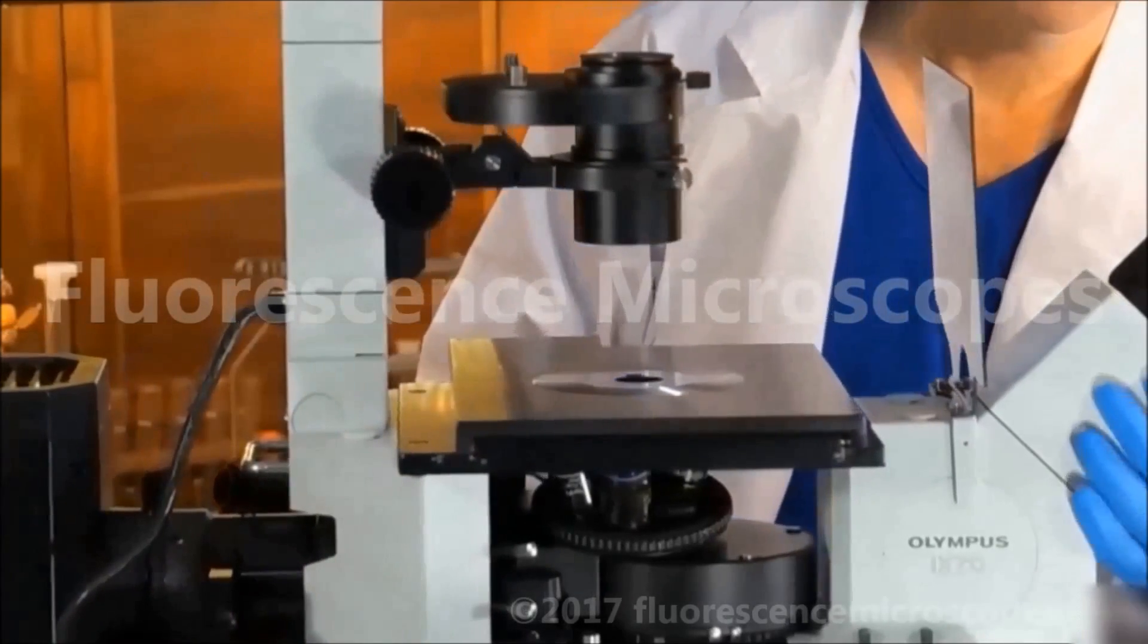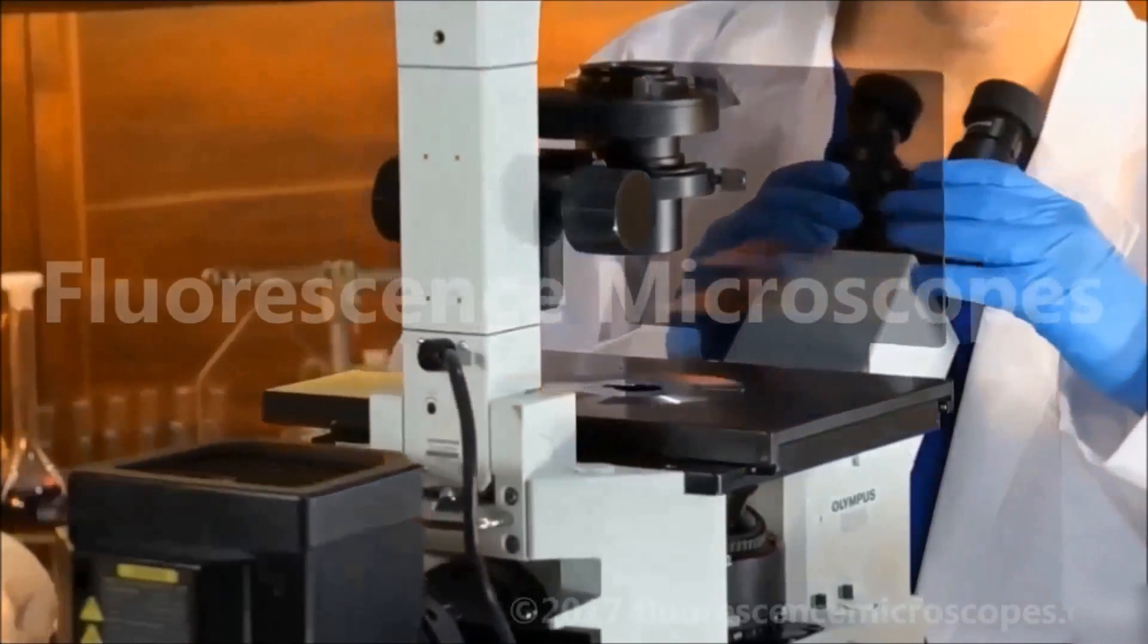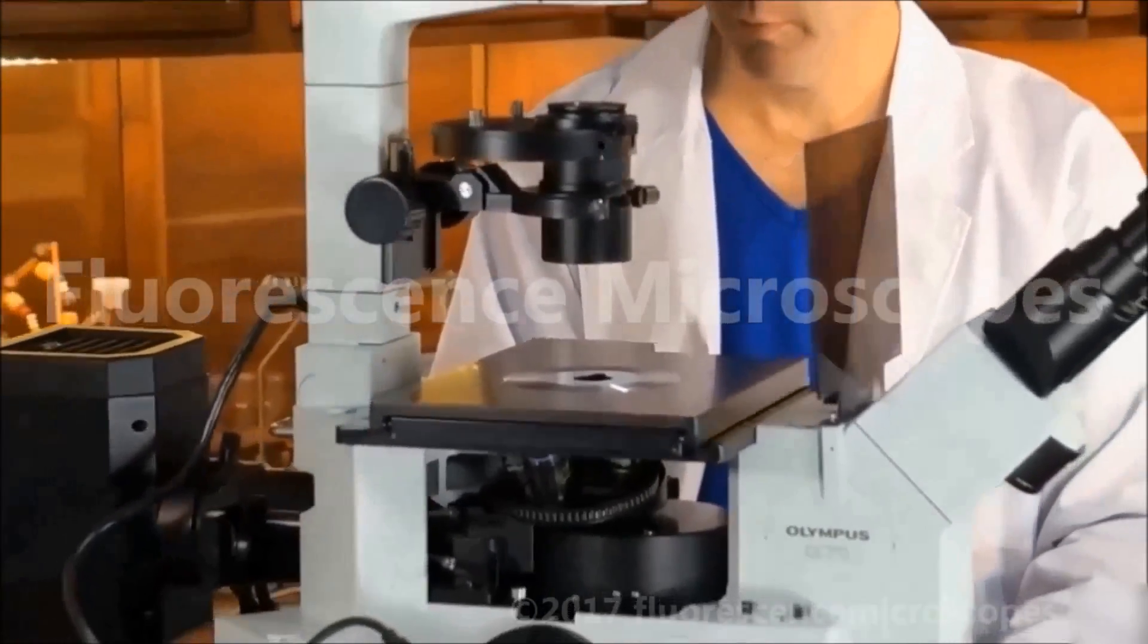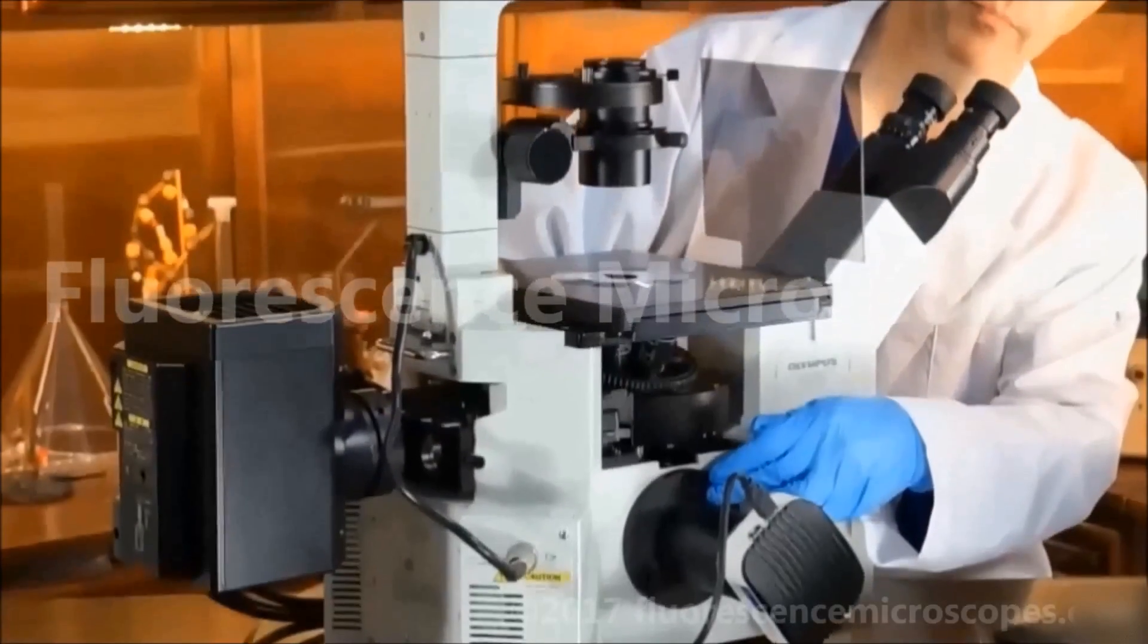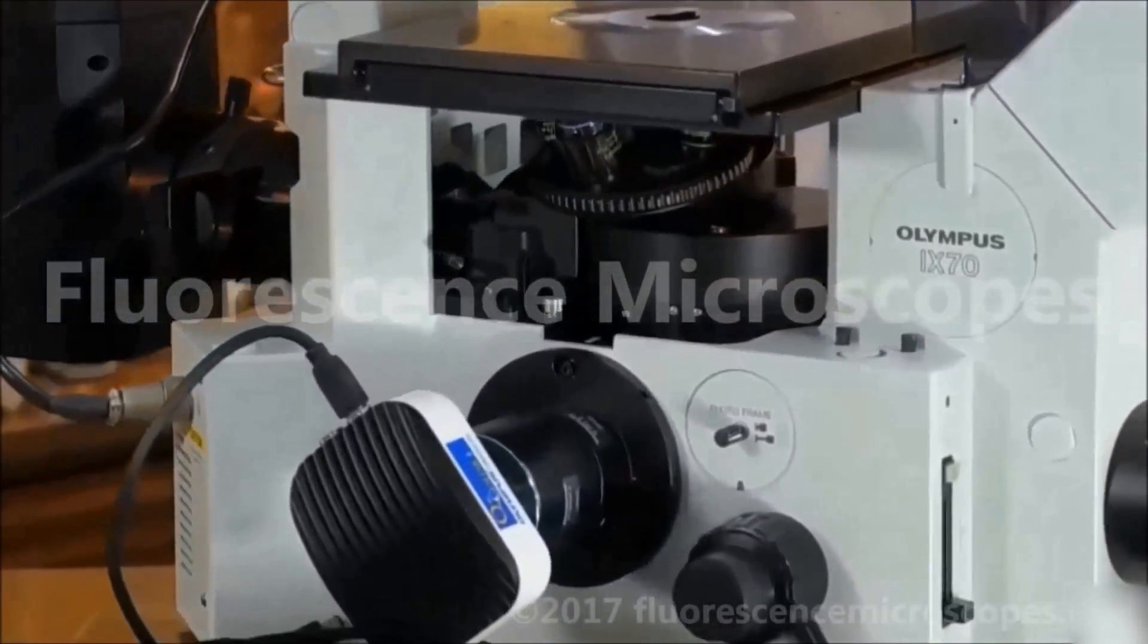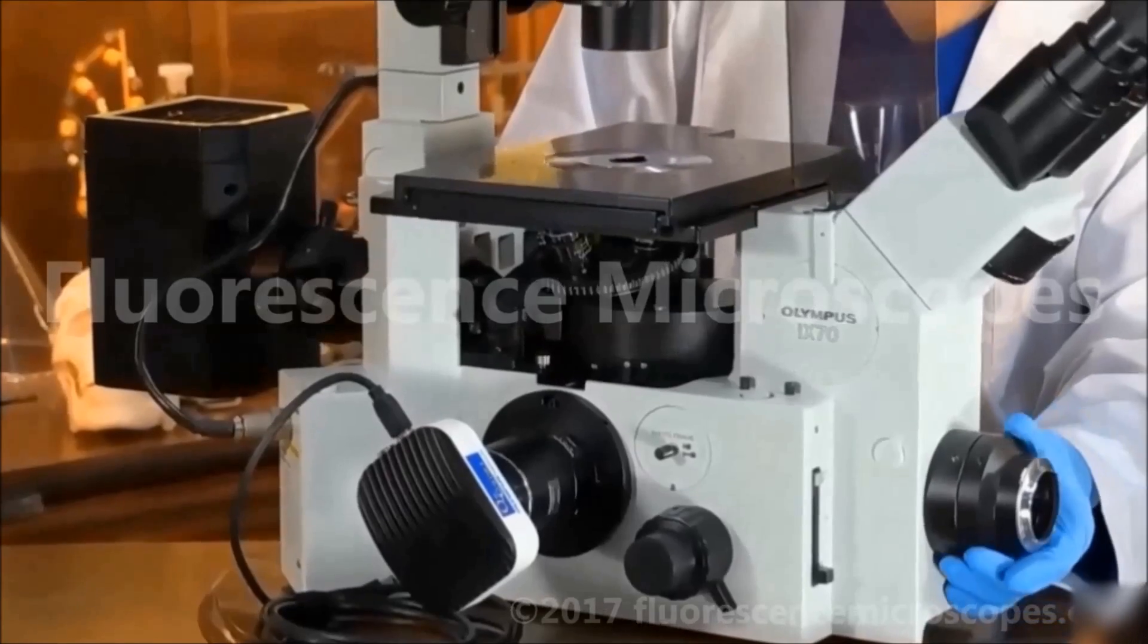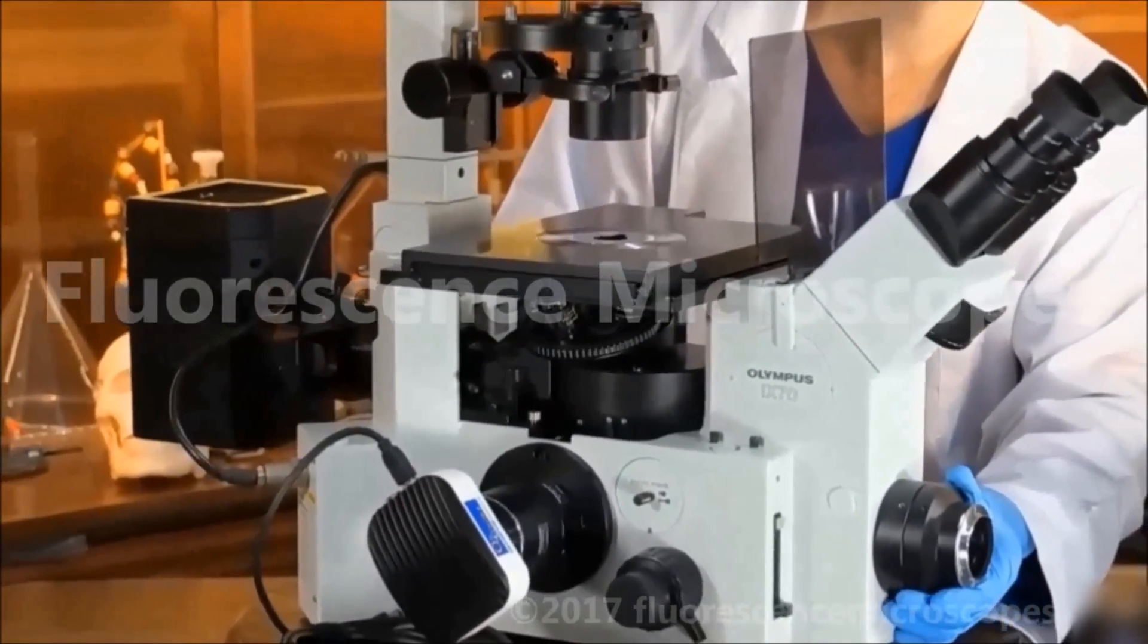This has a binocular hand, a binocular viewing tube, and we also have two different photo ports. One photo port is on the side, and the front photo port is for an SLR camera, like a DSLR, such as Canon EOS Rebel, would be an example.